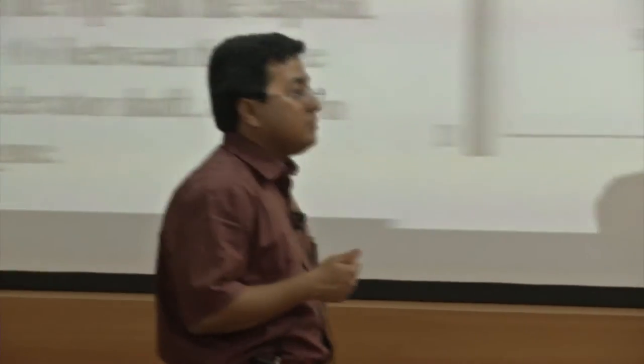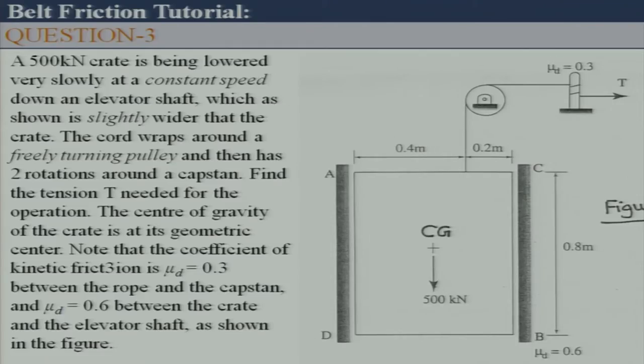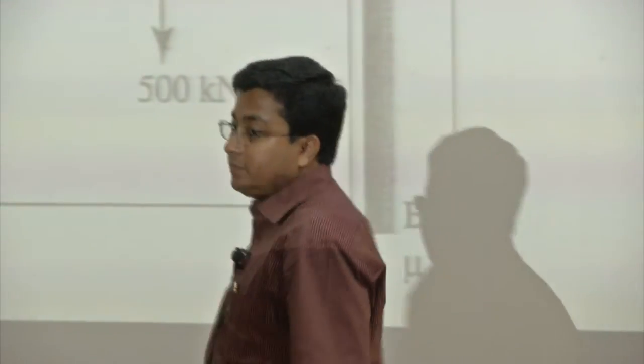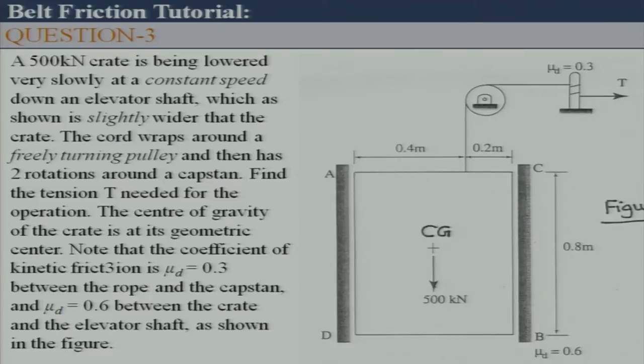Solving the five equations gives the intermediate tension t1 = 434.78 N — that is the tension in the cable connected to the crate. We then apply belt friction to get the final answer. The final tension T in the cable at the top is 10 kN.